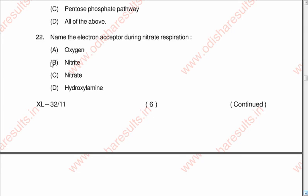Question twenty-two: Name the electron acceptor during nitrate respiration. A: Oxygen, B: Nitrite, C: Nitrate, D: Hydroxylamine. The correct option is C: Nitrate.